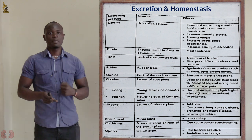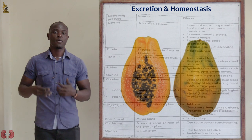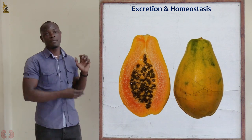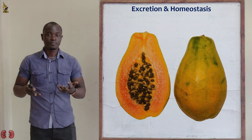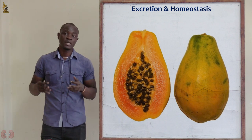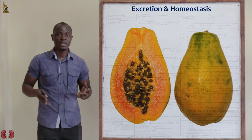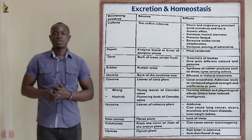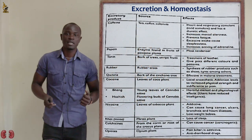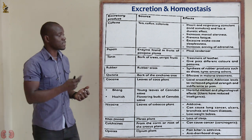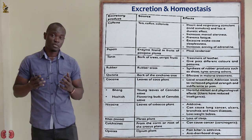Next is papain, which is mainly obtained from the pawpaw plant. There are also traces of papain in the pawpaw fruit. After that we have tannin, which is mainly obtained from oak trees.